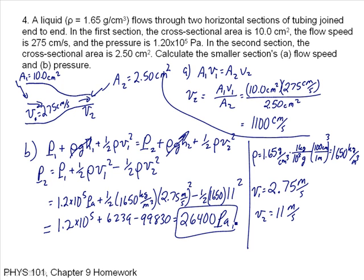That's equal to 26400 Pascals. So, your pressure drops when you go into the second pipe because the speed has increased. When V goes up, the pressure goes down.